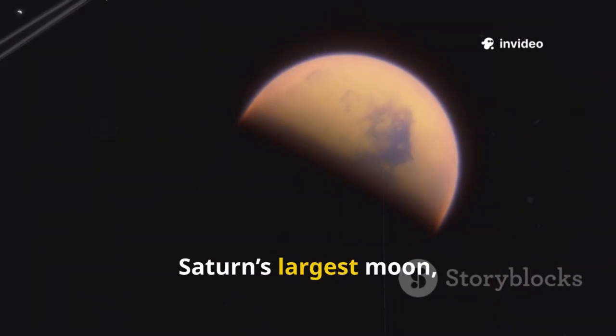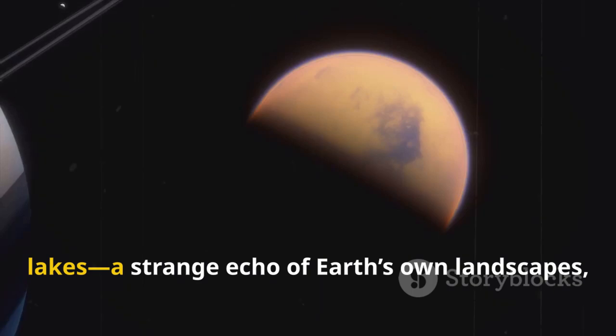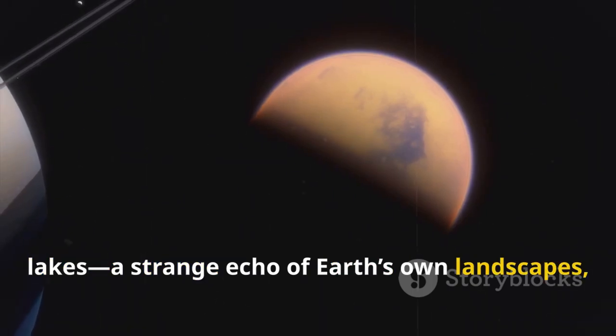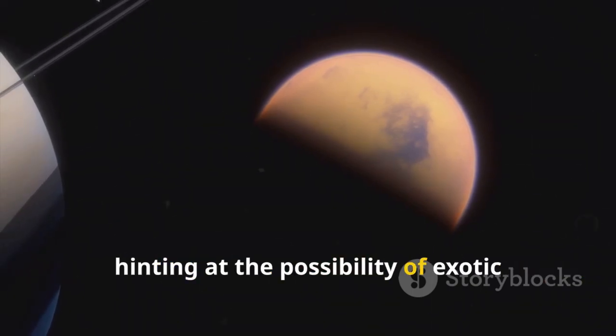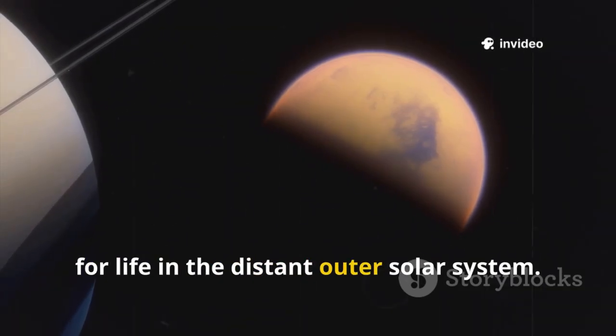Titan, Saturn's largest moon, was found to have a thick, hazy atmosphere and mysterious methane lakes, a strange echo of Earth's own landscapes, hinting at the possibility of exotic chemistry and perhaps even the ingredients for life in the distant outer solar system.